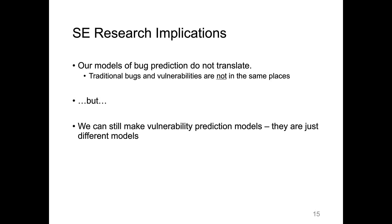Other researchers have already picked up on this and been developing vulnerability prediction models. But vulnerabilities are much more rare — we don't have as much data. Vulnerability prediction models are needed, but we need to build different models. They are conceptually different and empirically different. That is the first study I like to talk about as an example of what you can do with vulnerability history data.